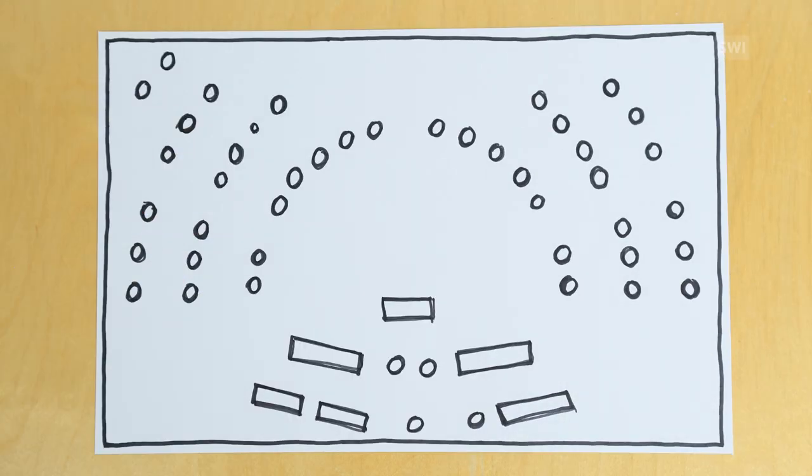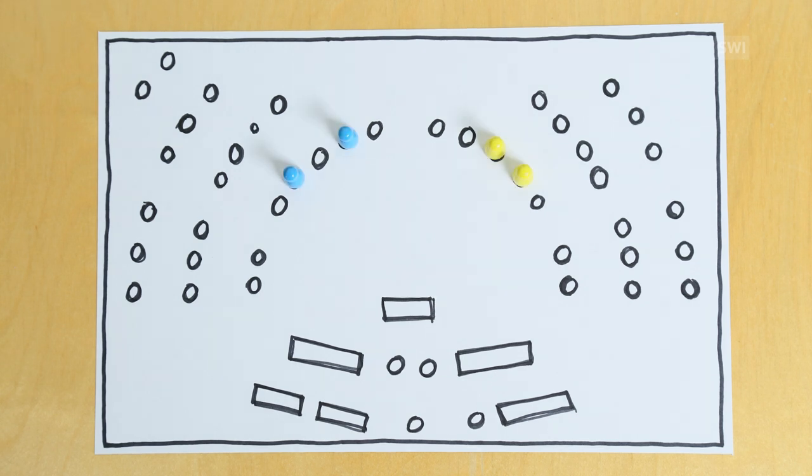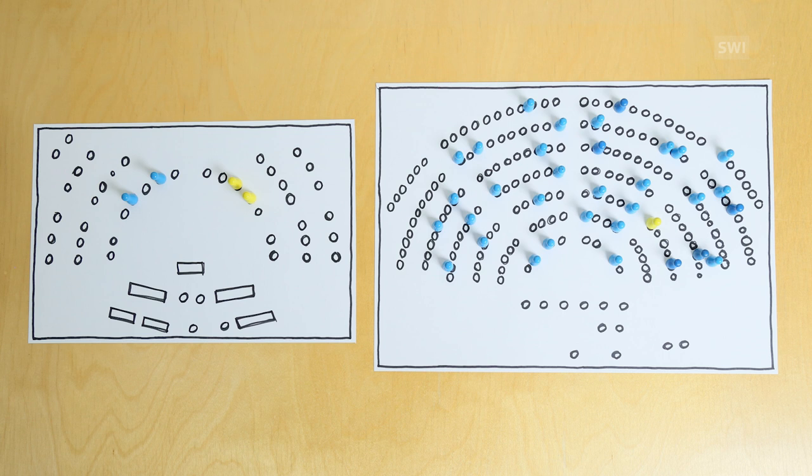They made a second chamber, the Senate, with 46 seats. Most cantons here have two seats. New legislation or changes to a law need approval by both chambers.